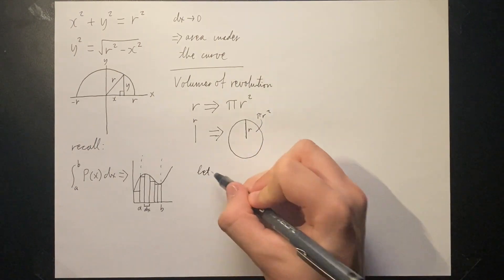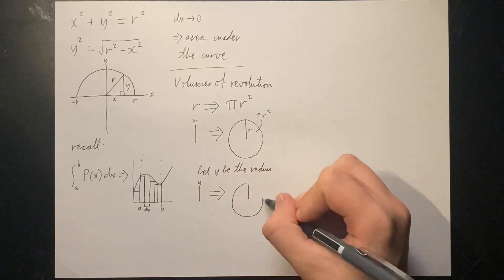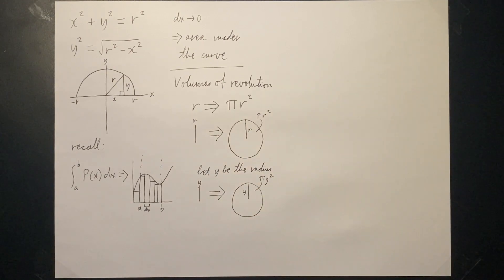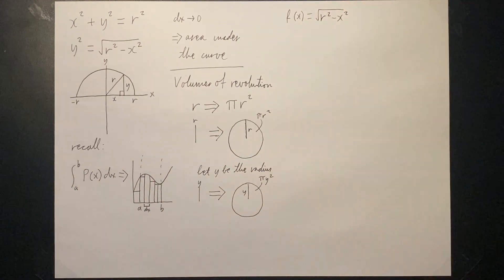If we let the function represent the radius, then squaring and multiplying by pi gives us the area of a circle with a radius of the function. Now let us apply that to the semicircle function. Let f of x be equal to the square root of r squared minus x squared.